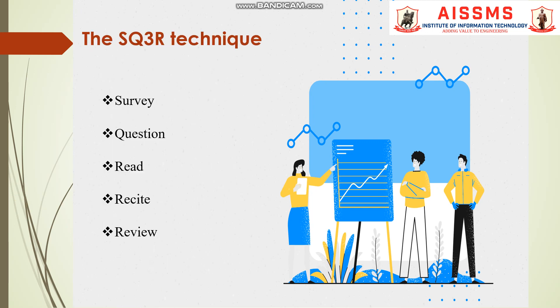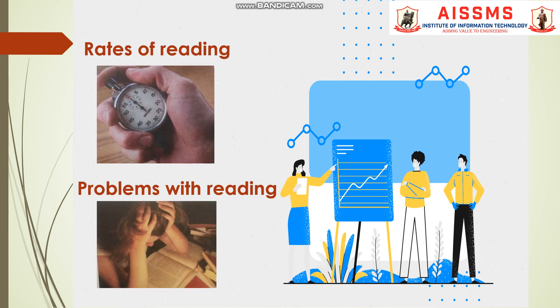To decide what to read, the SQ3R technique can be employed. S stands for Survey — gather the information you need to focus on. Q stands for Question — decide on the questions you want answered. The first R stands for Read — look for answers to those questions. The second R stands for Recite — after each section, stop, think, and find out if you remember what was read. The third R stands for Review — go back to the whole chapters. Reading rates vary for memorization, learning, comprehension, and skimming.